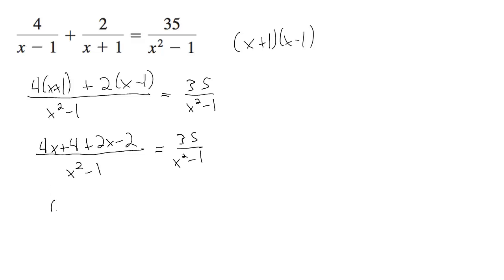So I end up with 6x plus 2 over x squared minus 1 is equal to 35 over x squared minus 1.